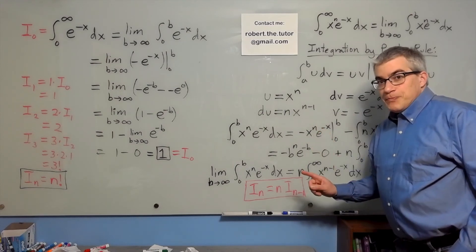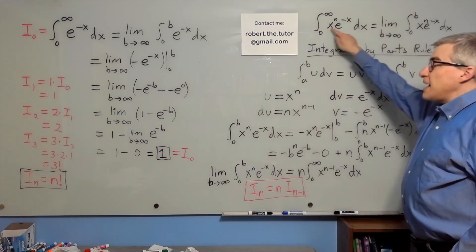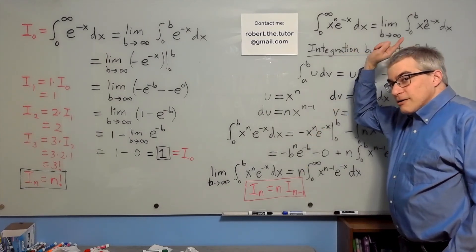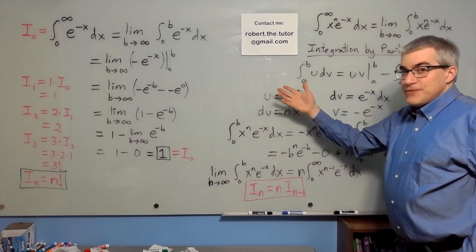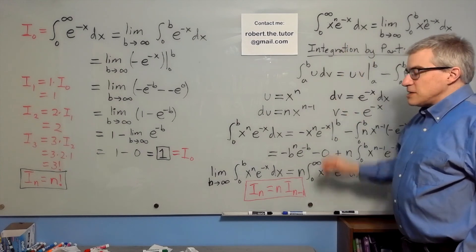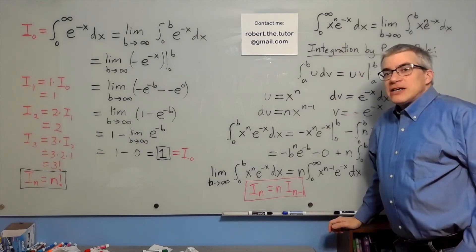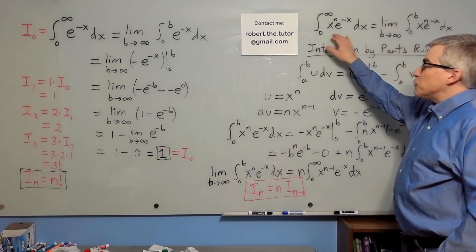Now, here's the kicker. Who said that n has to be an integer? If we let n become one-half, say, that would let us know what one-half factorial is, if we can perform the integral.